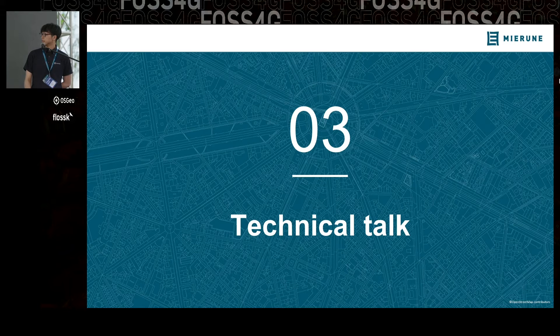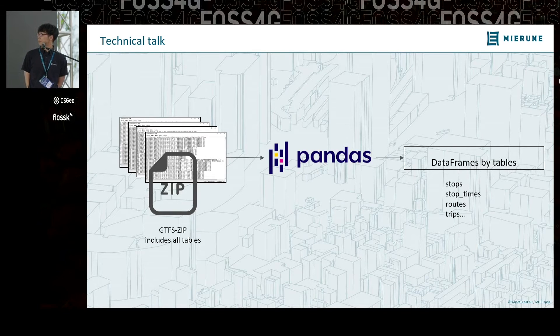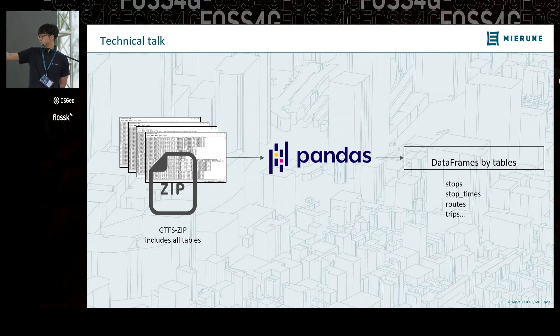Let's get into technical talk. GTFS Go heavily uses Pandas. GTFS is composed of comma-separated text files, so it is natural to convert them into DataFrames — stops, stop times, routes, trips — each text file into DataFrames.